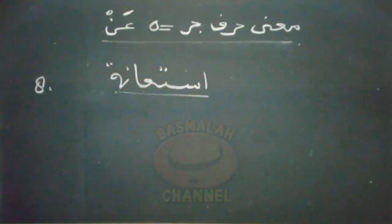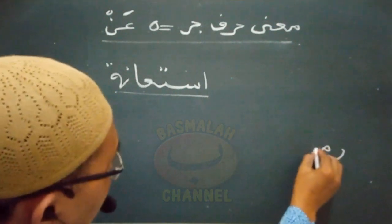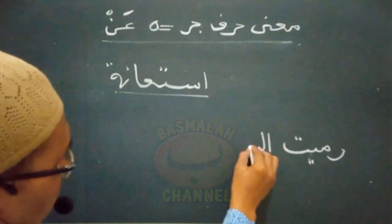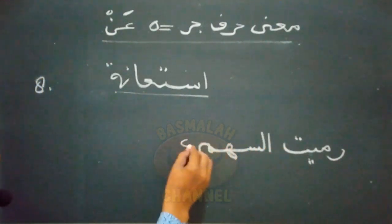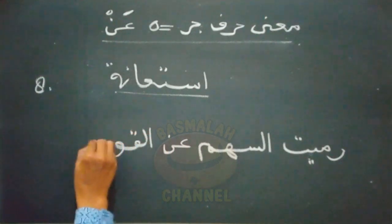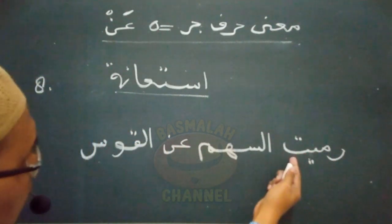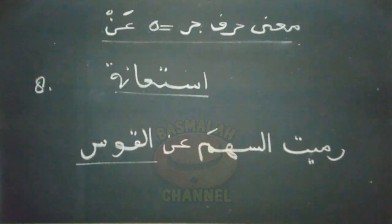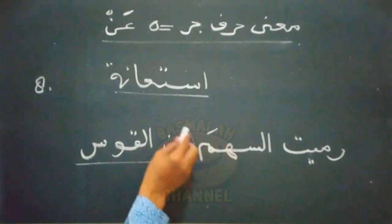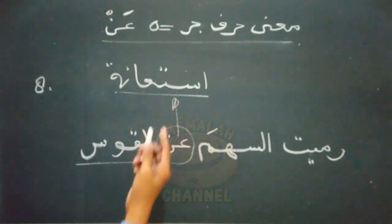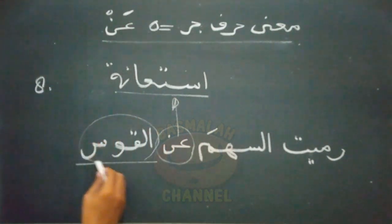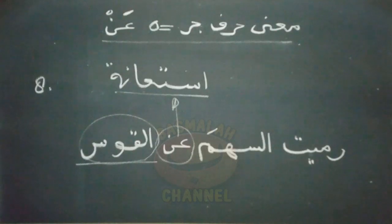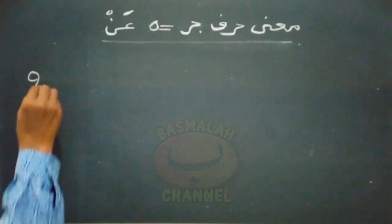Kemudian makna yang kedelapan adalah isti'anah, yaitu menjadikan lafad yang terletak setelah an sebagai perantara dari pekerjaan yang dilakukan. Contohnya seperti lafad 'ramaitu as-sahma anil qawsi', artinya saya melempar anak panah dengan perantara busur panah. Lafad an dalam susunan ini mengandung makna isti'anah, dimana lafad yang terletak setelahnya merupakan media atau perantara untuk melakukan sesuatu.